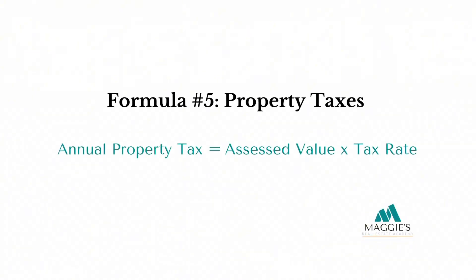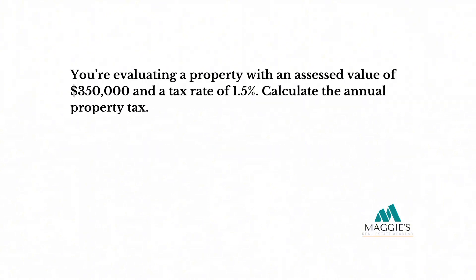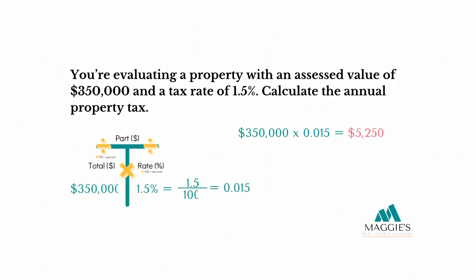Formula number five: property taxes. Assessed value of property times tax rate equals annual property tax. Say you're evaluating a property with an assessed value of $350,000 and a tax rate of 1.5%. Calculate the annual property tax — the answer is $5,250. I'll drop a link to a video all about calculating property taxes in the description box below.